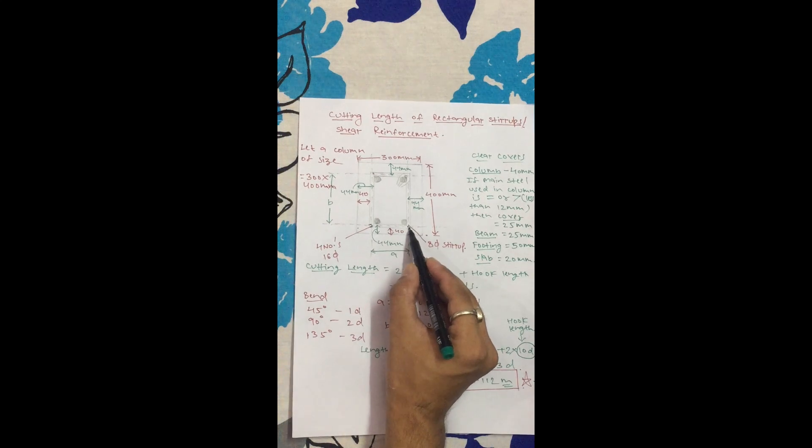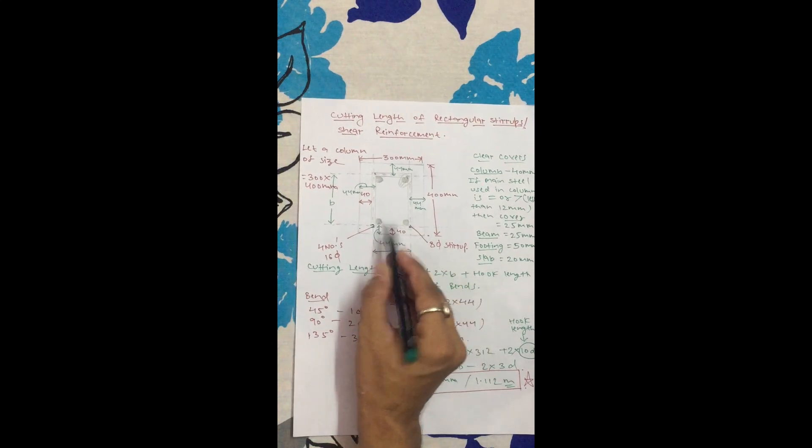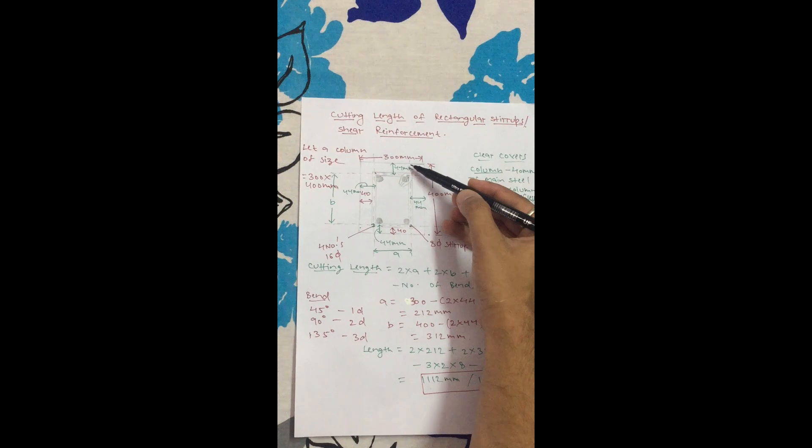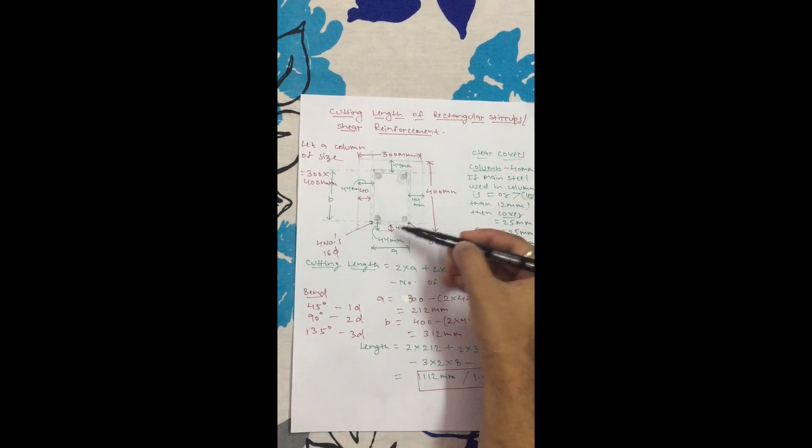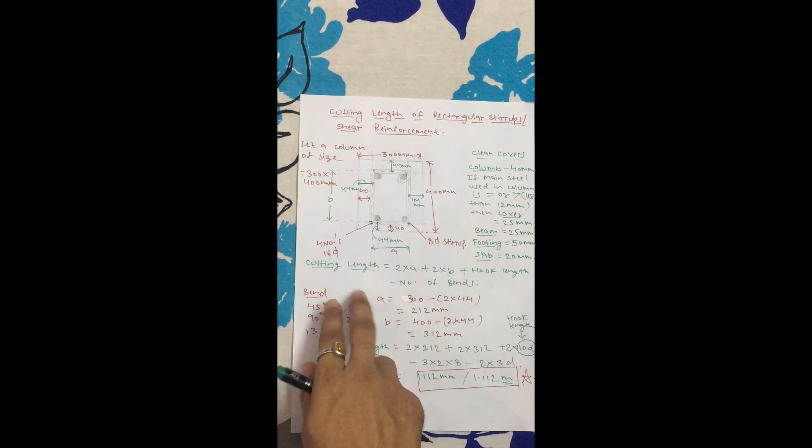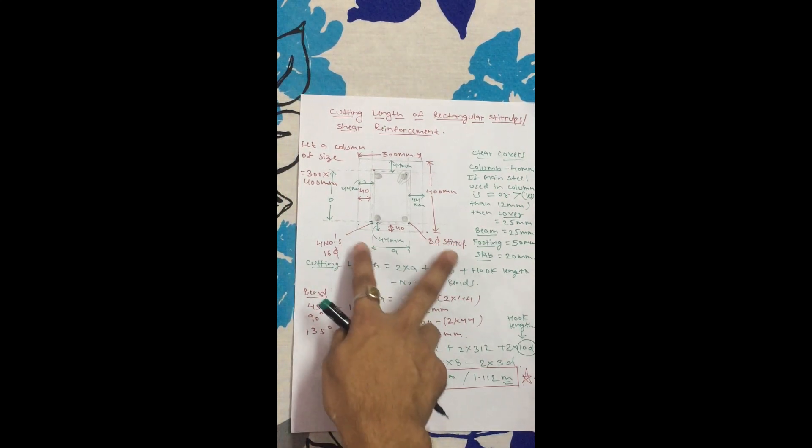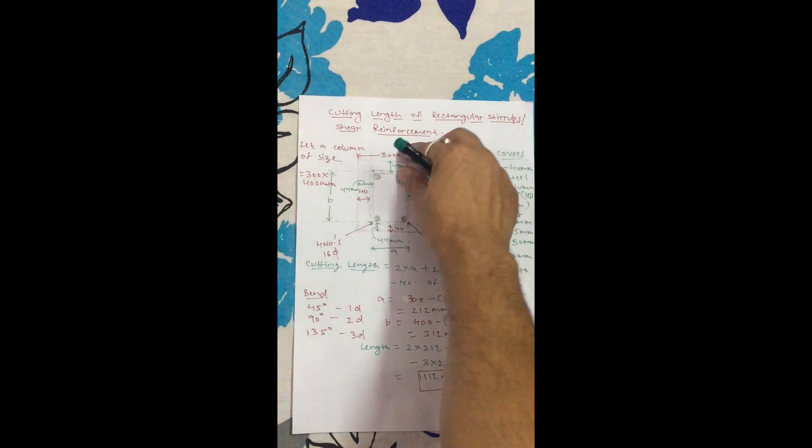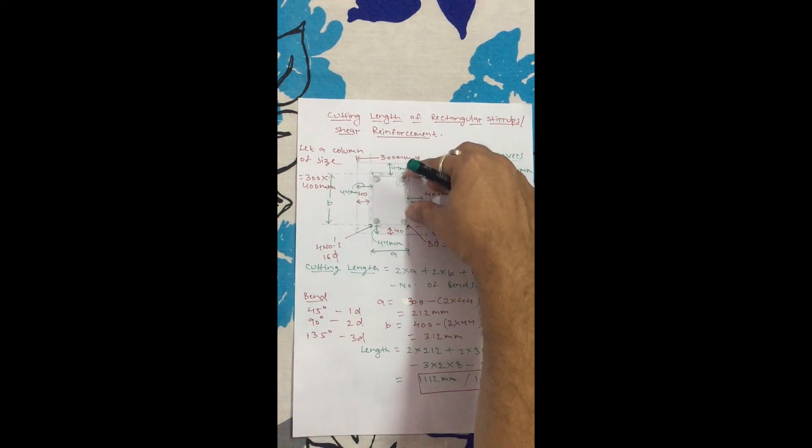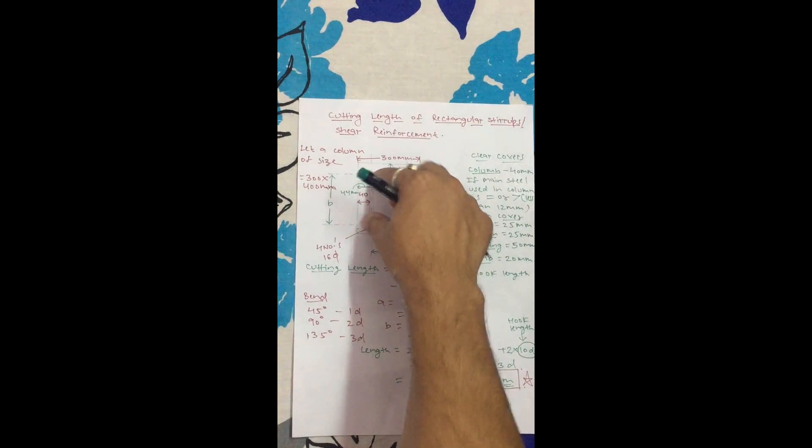Same on the opposite side: 40 plus half, 4mm, equals 44mm on both sides. So from 300, we get 300 minus 44 minus 44. The same calculation for the other dimension - center to center on both sides.